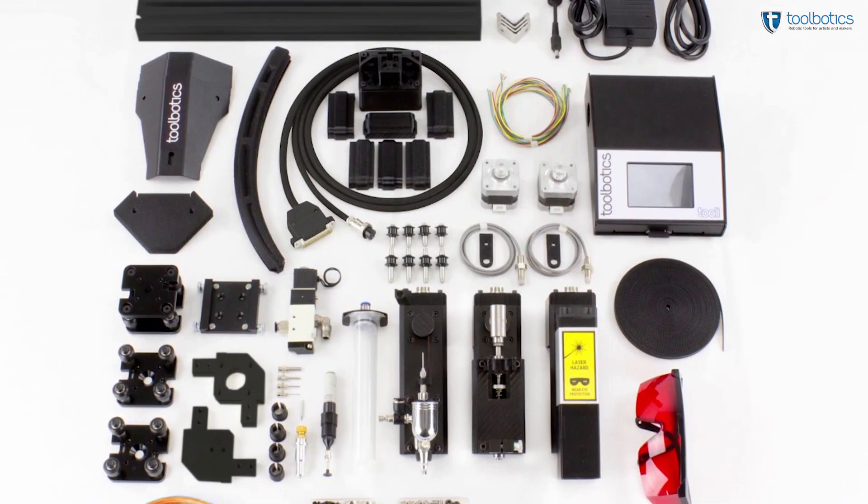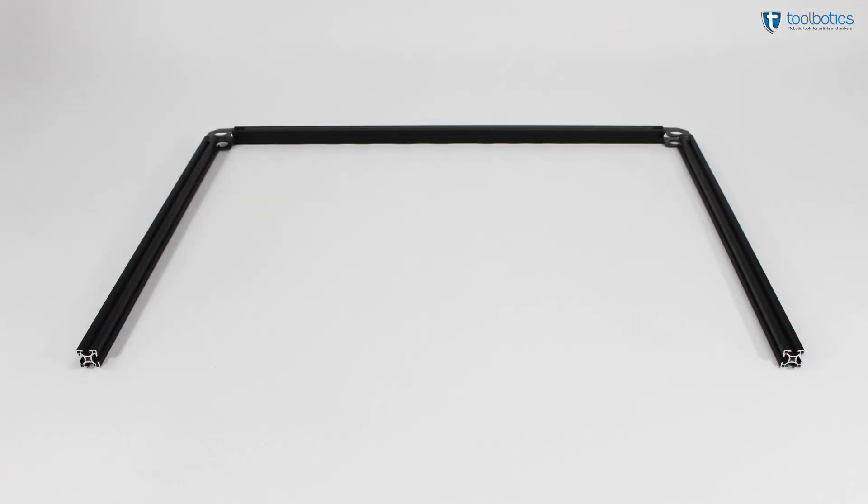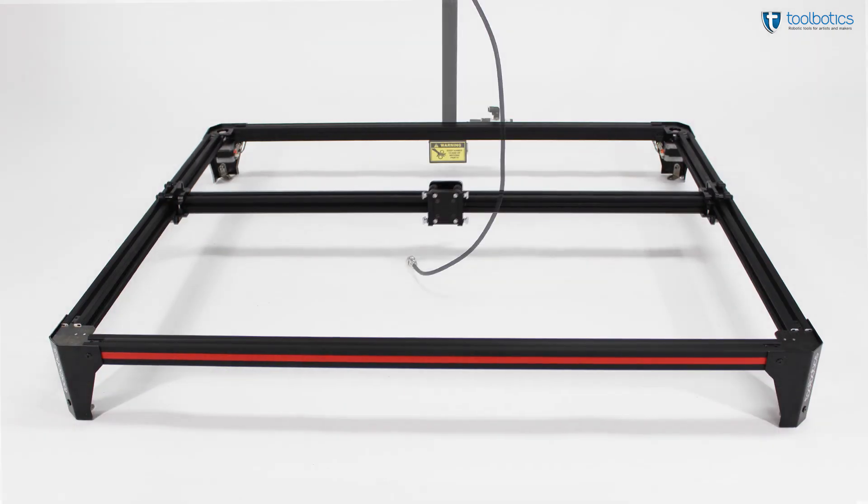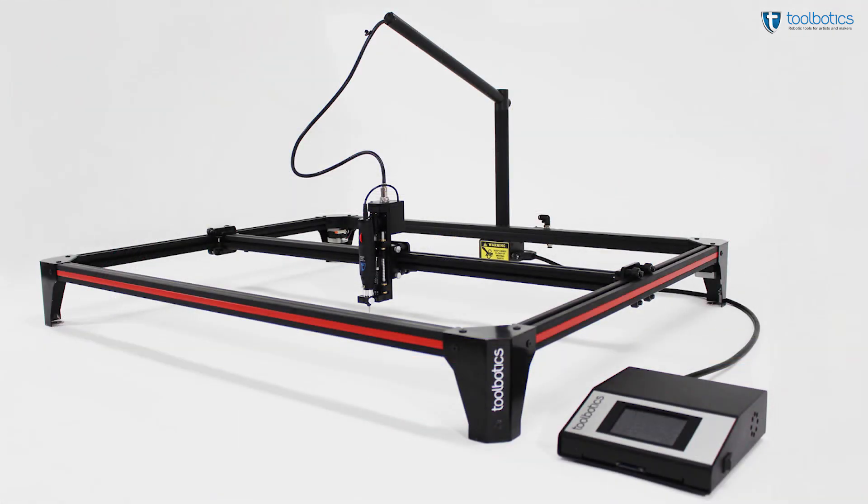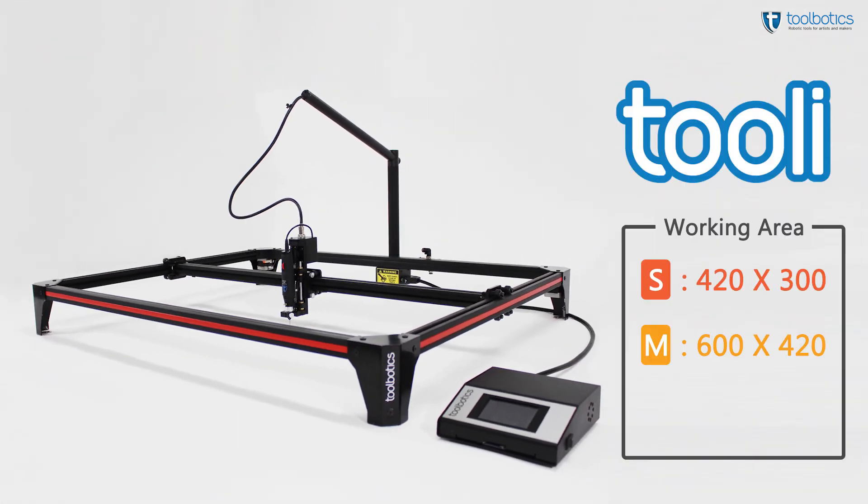TULI G3 comes as a partially assembled machine and in three sizes: small, medium, and large.